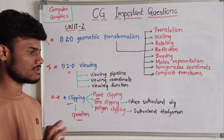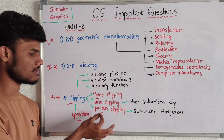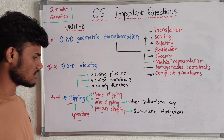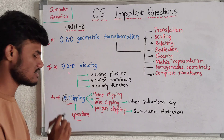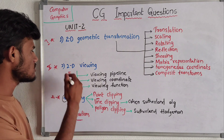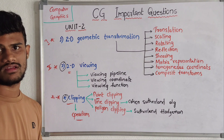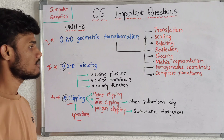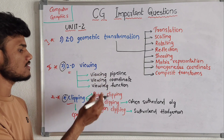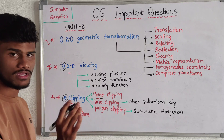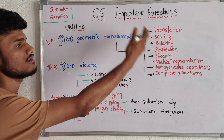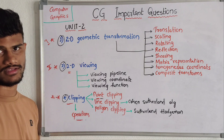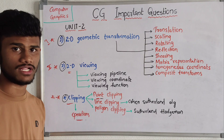For polygon clipping, we use the Sutherland-Hodgman algorithm. These two algorithms are individually very important. If you prepare the 2D viewing and clipping topics well, you can score 10 out of 10 marks. This is all about the second unit — 2D geometric transformations, 2D viewing, and clipping.